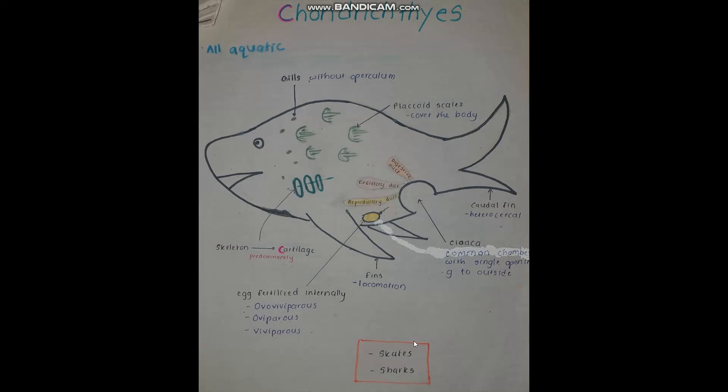Examples of Chondrichthyes are skates and sharks. Both start with S and are written inside a box. I think this video will be helpful to study this topic without missing any point. This study method is much more effective than rote memorization because you can retain long-term memory. Also, studying won't be boring and stressful anymore. Thanks for watching this video and I hope you found it helpful.